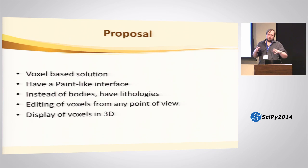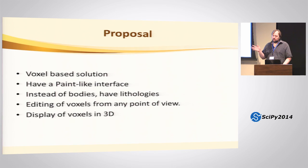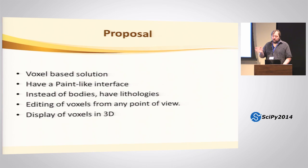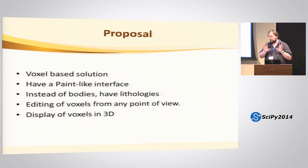The proposal was that the modelling package would have a voxel-based solution — 3D pixels through the earth. This is convenient because if you want to do inversions, you're already in the right place. We would have a paint-like interface. Instead of different bodies, we would call them lithologies: one attribute coded to the colour of the lithology in the paint program. If you think about the GIS analogy — a shapefile with polygons each having attributes — in normal 2D modelling you'd have to duplicate attributes for identical adjacent bodies. With our approach, you just draw it and it links up neatly.